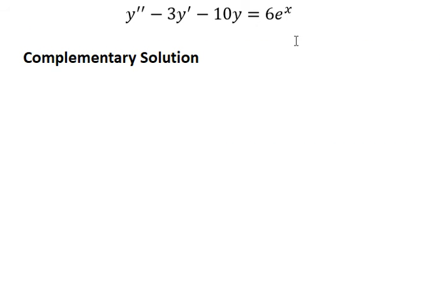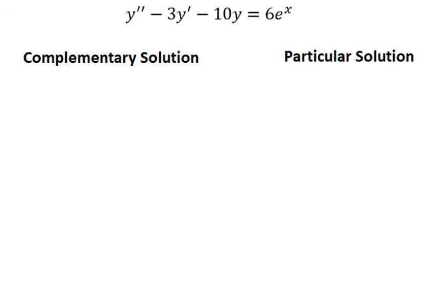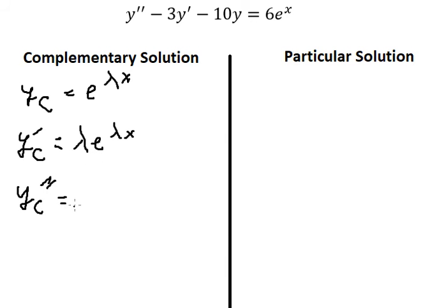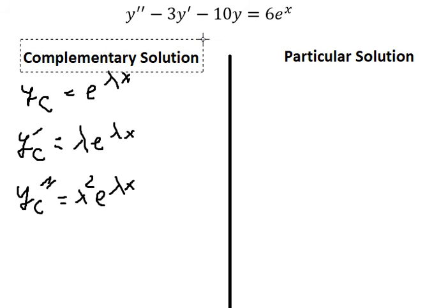For the complementary solution, we set yc equal to e to the power of lambda x. If we do the first derivative of this, we get lambda e to the power of lambda x. Keeping that, and doing the second derivative, we get lambda squared e to the power of lambda x.